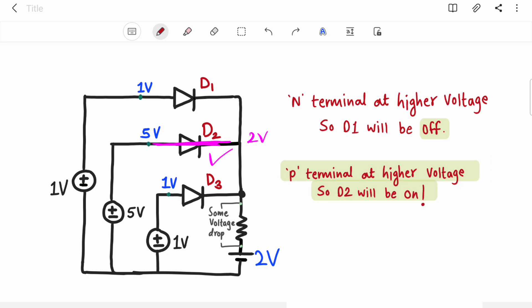But still we will examine for D3. Now again here is 1 volt and here is 2 volts, so it is going to be again reverse biased, means open circuit. So D3 is not going to conduct. So your answer is D2.